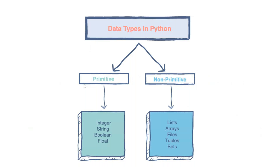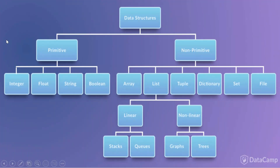There is one more classification in Python: primitive and non-primitive. Primitive means the data types incorporated with the earlier Python release. Later on, other data types were added, like list, array, files, tuples, and sets. Primitive includes integer, float, string, and boolean. Non-primitive includes array, list, tuple, dictionary, set, files, and all.